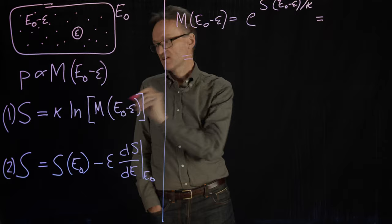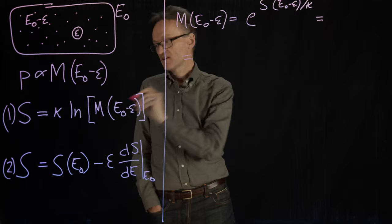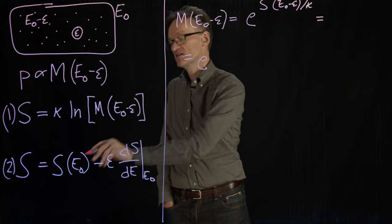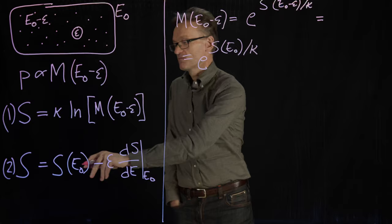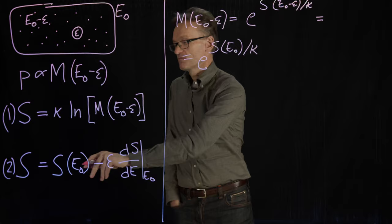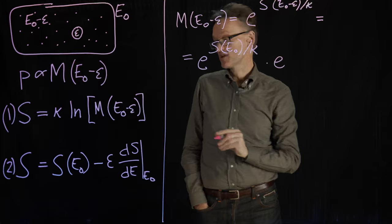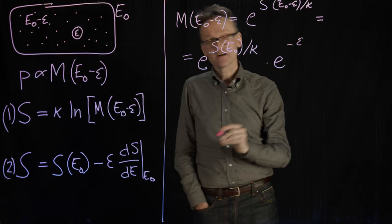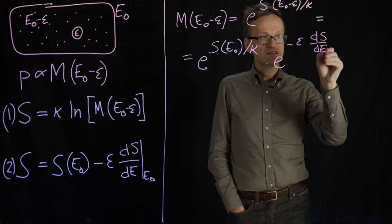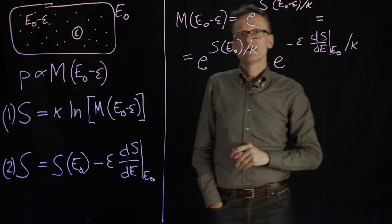So let's then insert equation 2 here. That corresponds to the exponential, the first term, s at the value E0 divided by kappa minus, well, the addition here corresponds to multiplication, right? So I can make this a separate exponential and then have a minus sign up here. e raised to minus epsilon. And then I'm going to need that entire expression ds de taken at the value E0 divided by kappa. And this might not look simple, but you're done. This is amazing.